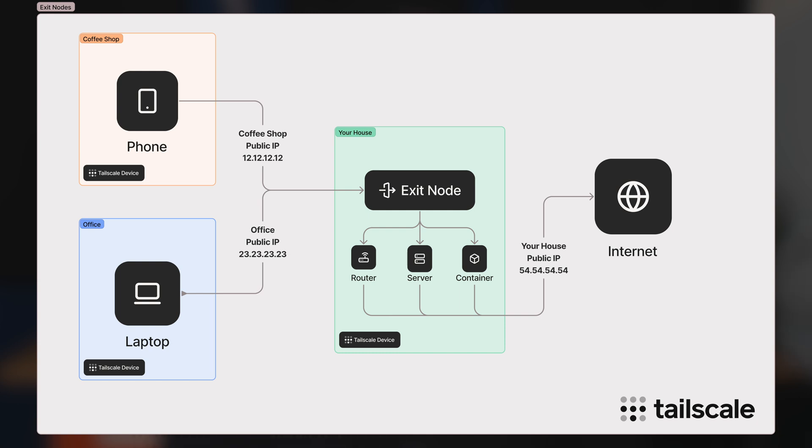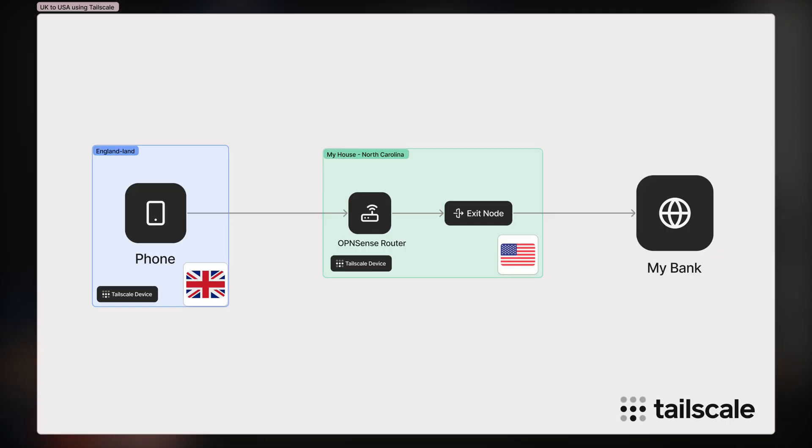Let's say you want to do some online banking whilst you're on holiday. This happened to me this summer — I wanted to access my US bank account whilst I was in England. However, my bank decided that accessing their banking app from another country was a huge security risk. So what I did was I flipped on the exit node functionality so that my phone sent all of its traffic over Tailscale as an exit node to this house here in North Carolina. Suddenly, my bank had no idea that my traffic was any different than if I was physically in this building.